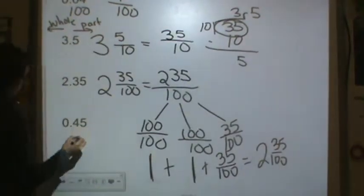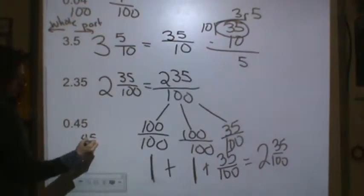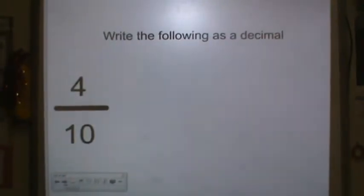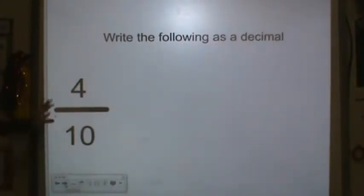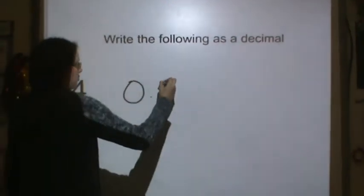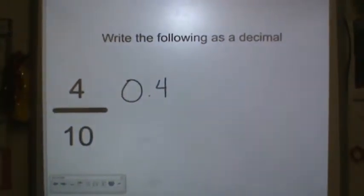And I think the last one that we needed to write out was 45 hundredths. So that's 45 over 100. Now we're going to write these as decimal. We read this as 4 tenths. I can keep it the way it is. So I have 0 decimal 4. So you need to put the 4 in the tenths place.